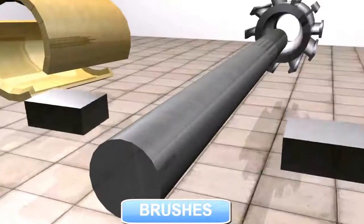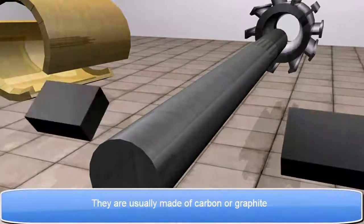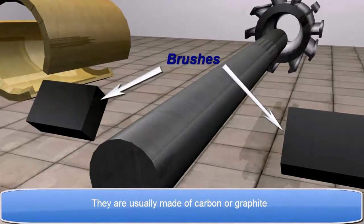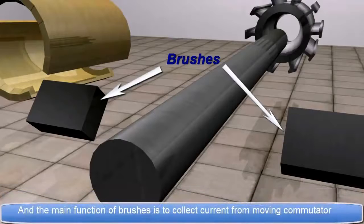Brushes: They are usually made of carbon or graphite. And the main function of brushes is to collect current from moving commutator.